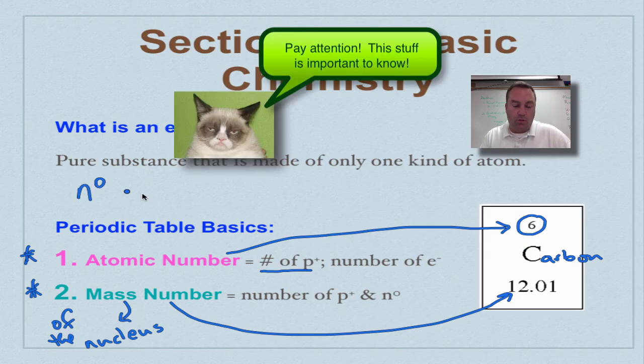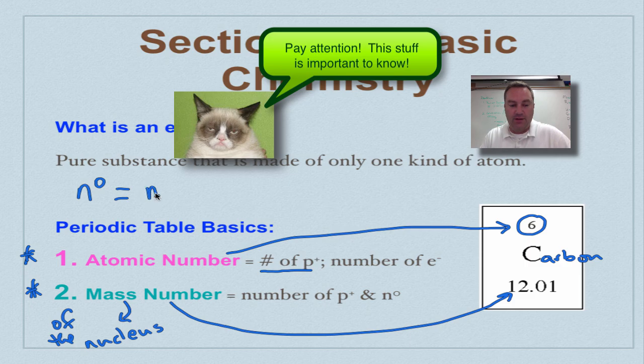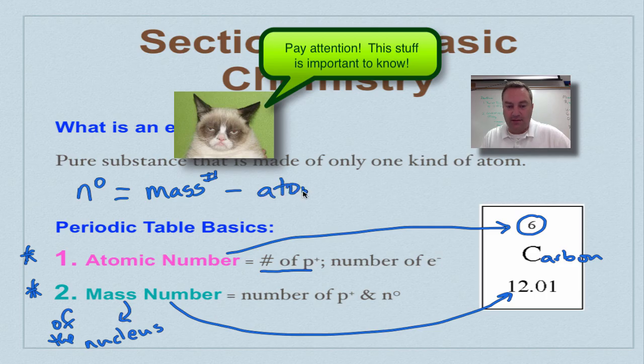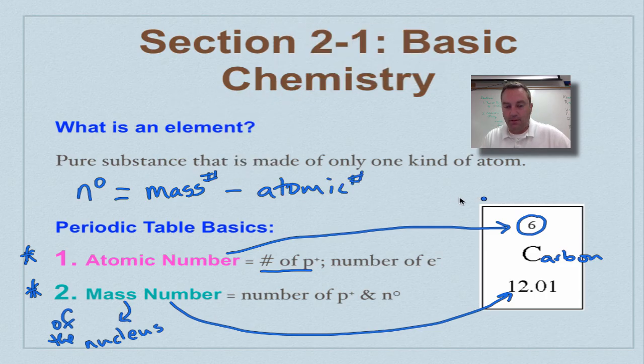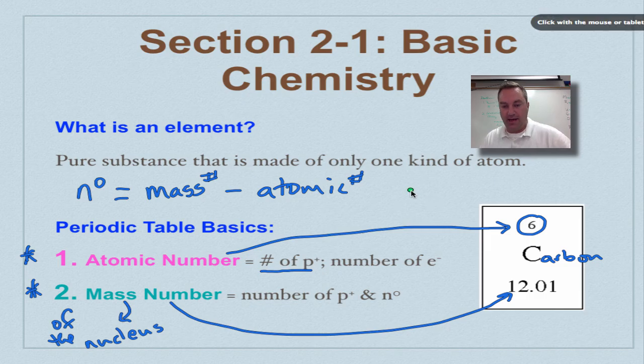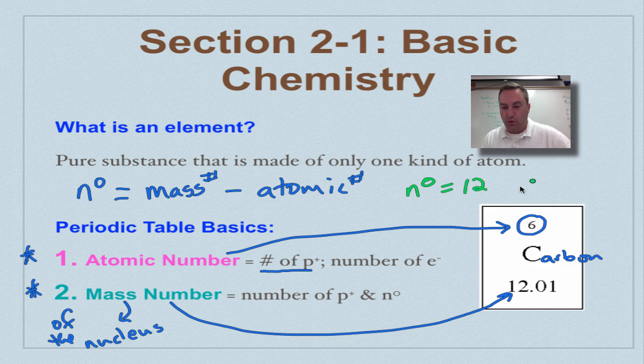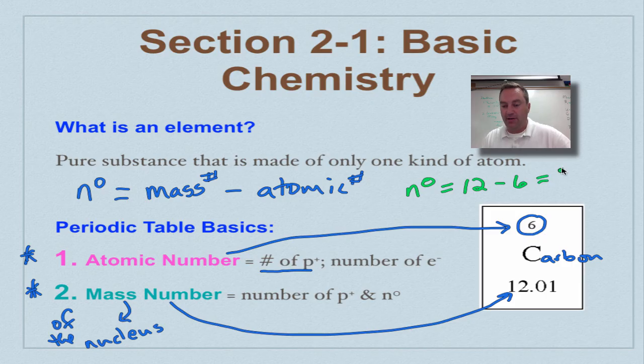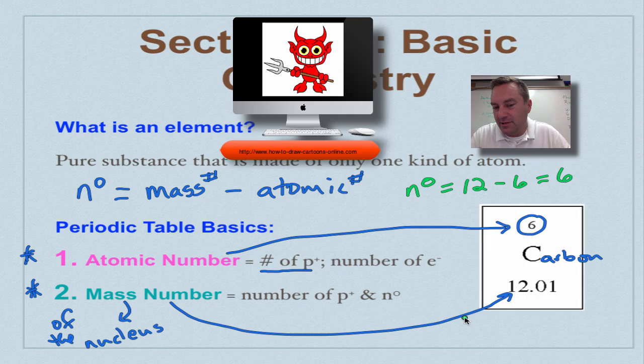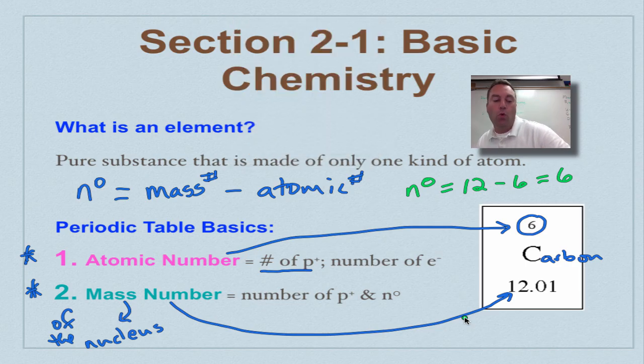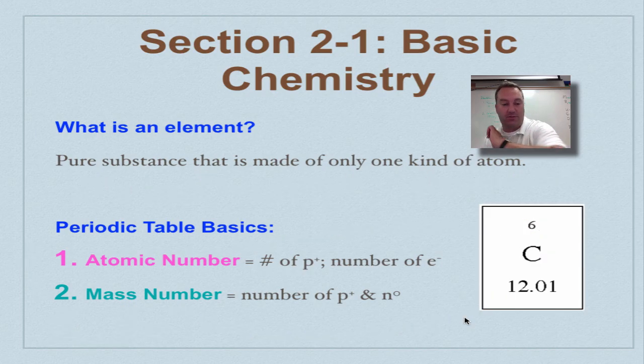If I want to find out what the number of neutrons are, all I have to do is I take the mass number, and I subtract the atomic number. So in this case, the number of neutrons in a carbon atom are going to be equal to the number 12 minus six, mass number minus atomic number, and that's going to give us the number six. So carbon is kind of devilish. It has six electrons, six neutrons, and six protons. Six, six, six. The mark of the beast.